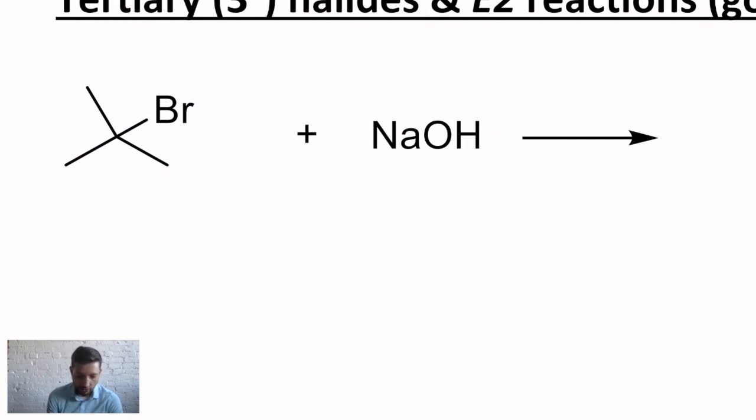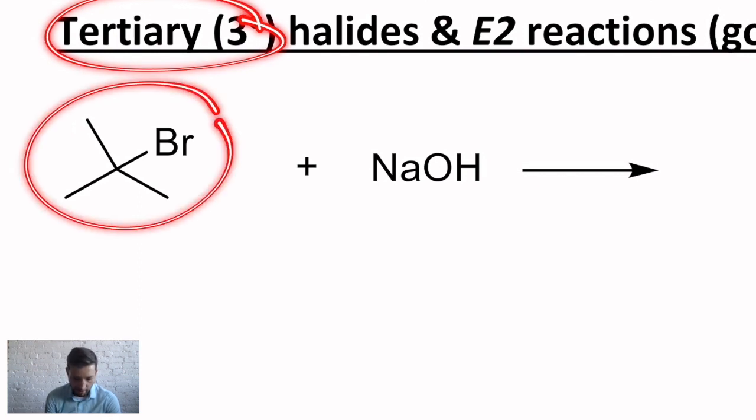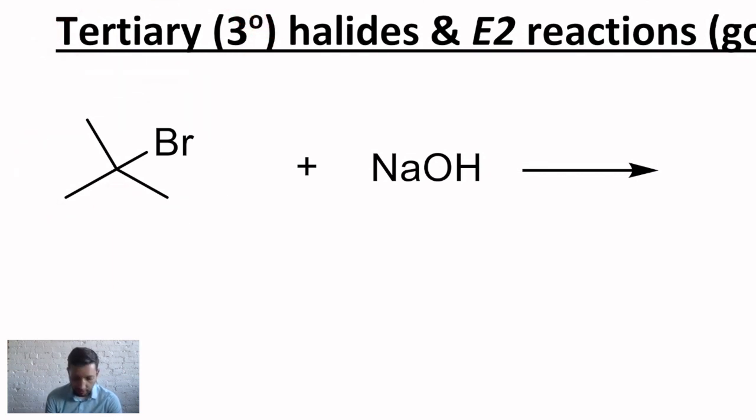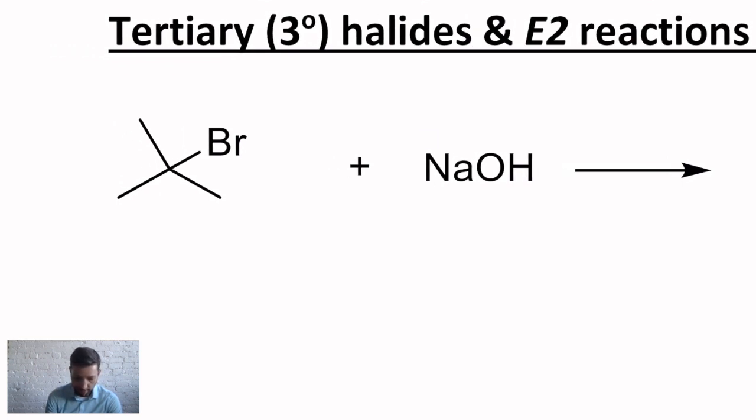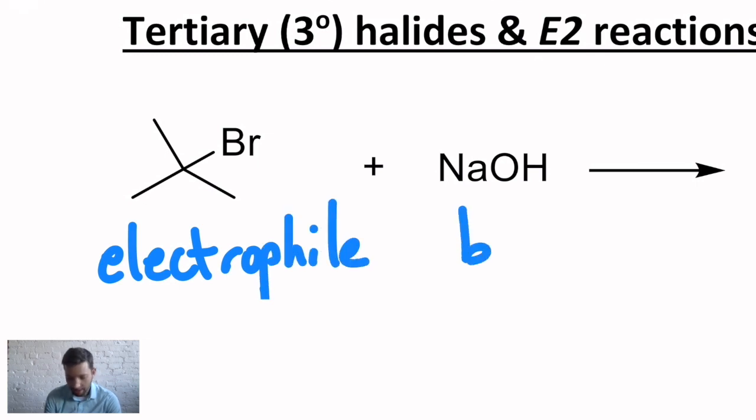This is what you get with things like tertiary halides, much more sterically crowded halides, such as this t-butyl bromide molecule. Your t-butyl bromide, in this case, your tertiary halide is still acting as an electrophile. But the other reactant is no longer a nucleophile, it's now going to act as a base.